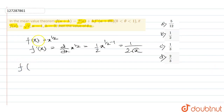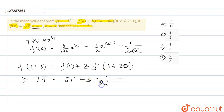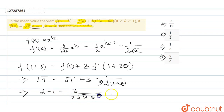Now substituting: a equals 1, h equals 3. So f of a plus h means f of 1 plus 3, which is f of 4. That equals f of a, which is f of 1, plus h times f dash of a plus theta h, meaning 3 times f dash of 1 plus 3 theta. So root over of 4 equals root over of 1 plus 3 times 1 by 2 under root of 1 plus 3 theta. This gives 2 equals 1 plus 3 divided by 2 under root of 1 plus 3 theta.